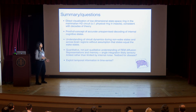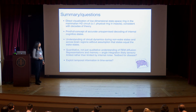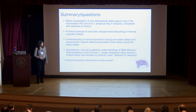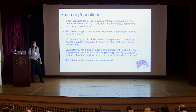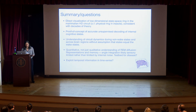To summarize Part 1: we have a direct visualization of the low-dimensional ring state space in the mammalian head direction circuit — gratifying and consistent with decades of theory. We have a proof of concept of accurate unsupervised decoding of internal cognitive states. We can understand circuit dynamics during non-waking states without assuming they equal wake states, and we get quantitative — not just qualitative — understanding of REM diffusion, helping us understand the likely origins of this dynamics during sleep. David's next talk will cover a method that beautifully exploits the temporal structure to extract information from manifolds.